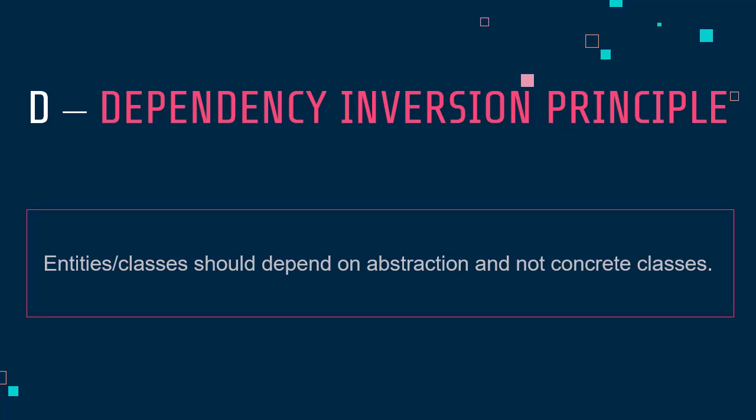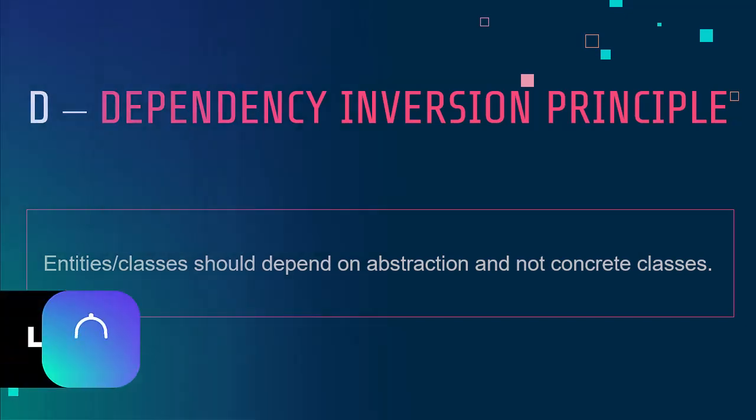Another example: let's say you have a simple toy that operates on a triple-A battery. The toy is dependent on the battery, but the toy does not care if you replace the battery with a brand new battery of a different brand or replace the set altogether. The toy is loosely coupled with the brand of the battery. If a toy required only a triple-A battery of one specific brand, that would be tight coupling.